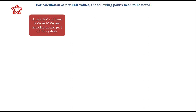The usual practice is to choose MVA or KVA in any one part of the circuit. The base MVA remains the same in all parts of the power system, irrespective of the transformer in between. However, the base voltage changes from one part of the power system to another because of the transformer. Therefore, you have to transfer the base kilovolts from one side to the other by multiplying by the transformation ratio of the transformer between the two sections.